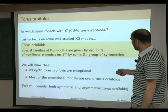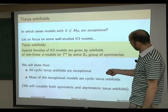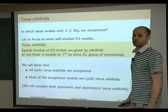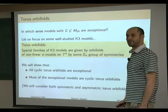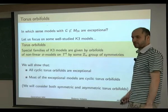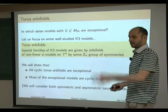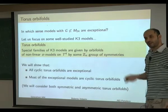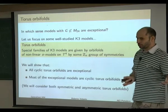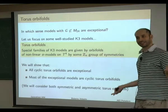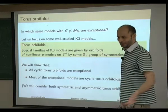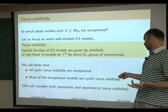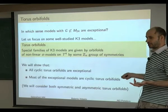What we found is that all cyclic torus orbifolds are actually exceptional models — all these models have a symmetry group not inside M24. The vice versa is almost true if you want to be optimistic, or false if you want to be more pessimistic: most of the exceptional models are actually cyclic torus orbifolds, but there are some families of exceptional models which are not.